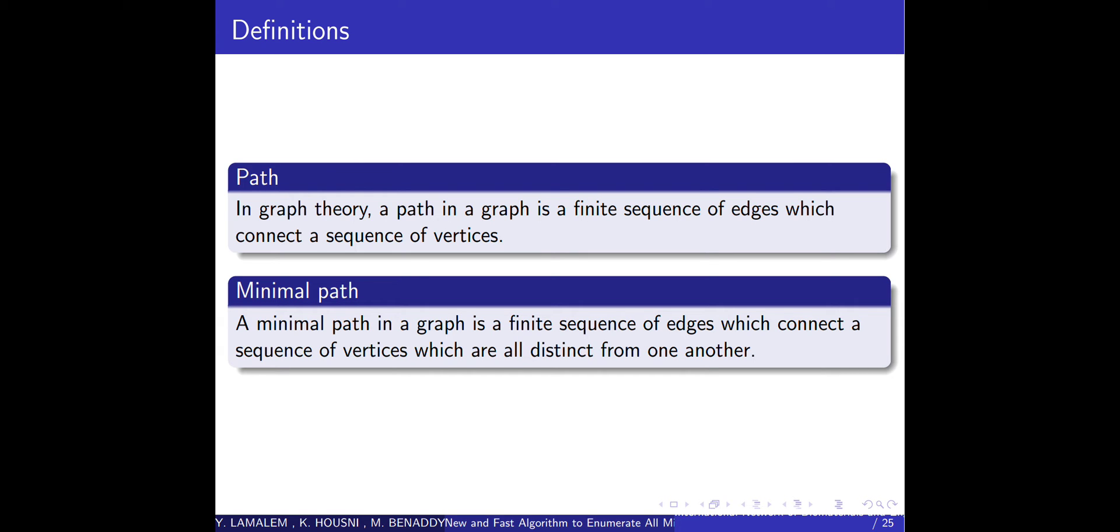A path in graph theory is a finite sequence of edges which connect a sequence of vertices. What is a minimal path? A minimal path in a graph is a finite sequence of edges which connect a sequence of vertices which are all distinct from one another.